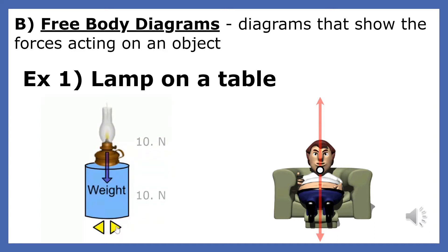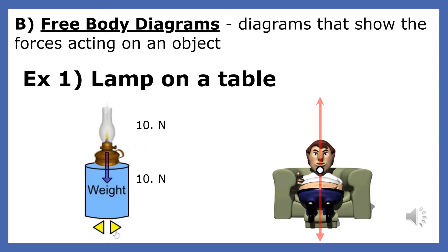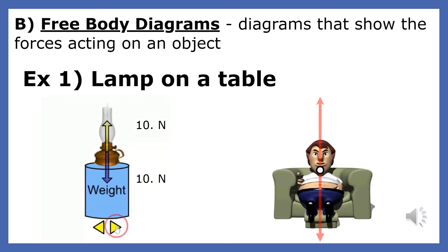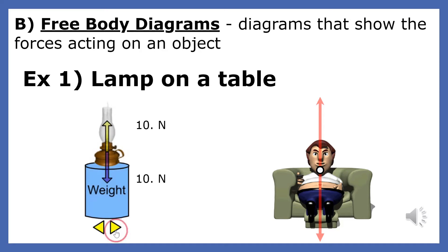The picture on the left shows a 10-Newton lamp at rest on a table. The free body diagram for the lamp has a 10-Newton force of gravity on the lamp that acts downward. All objects at rest have a net force of zero, so the table must exert a 10-Newton upward force on the lamp.